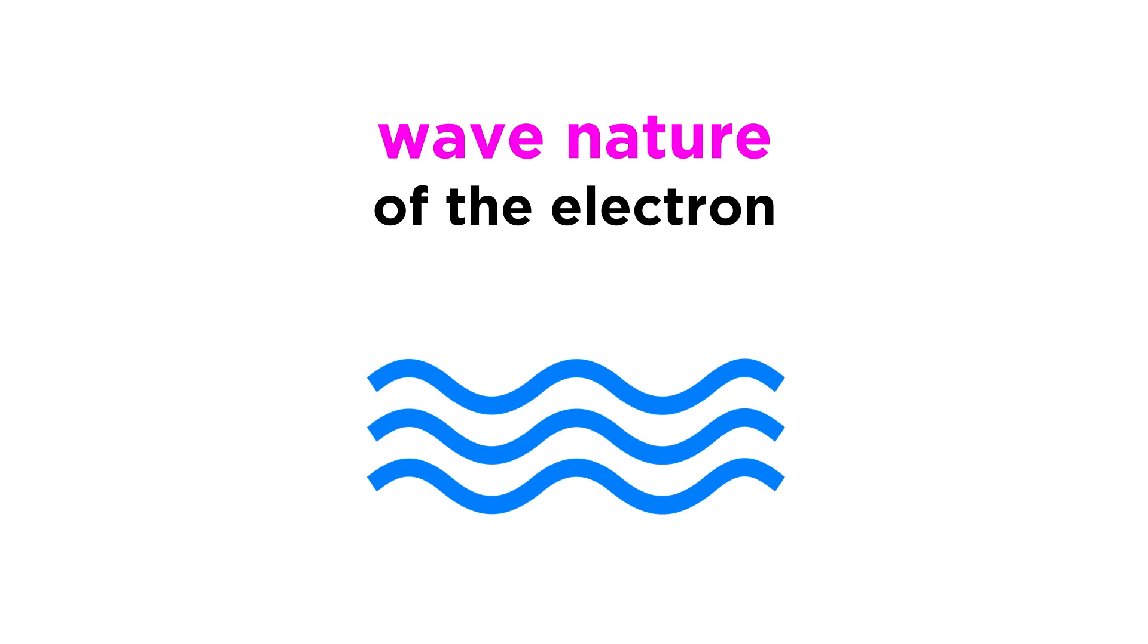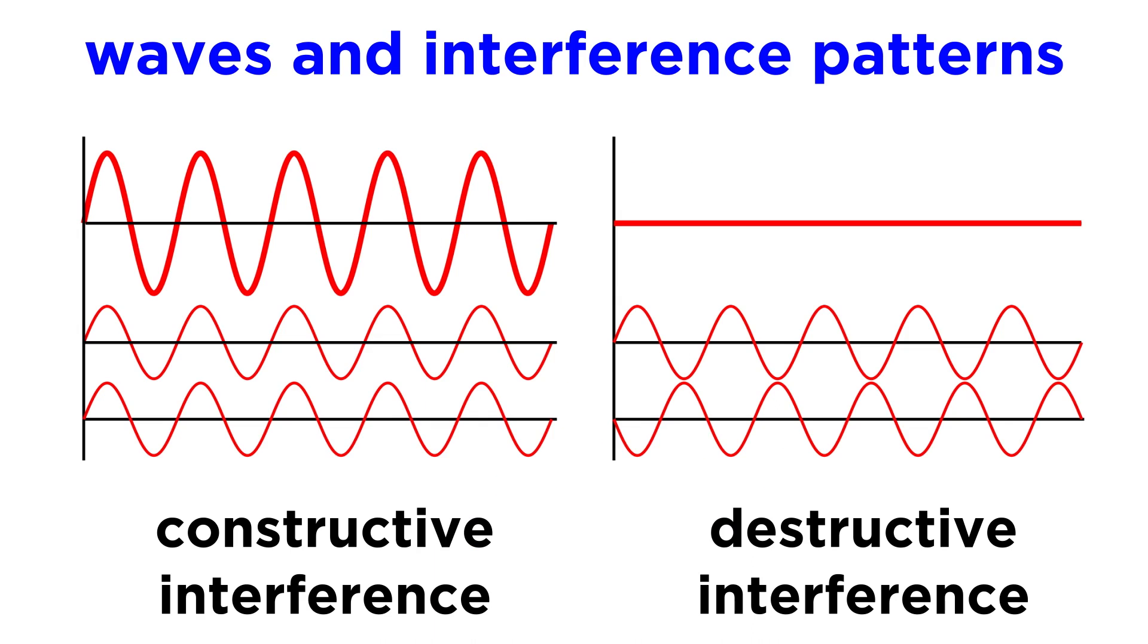This theory requires that we strongly consider the wave nature of the electron. In the classical physics series, we talked a lot about waves and interference patterns, so to get the full picture of wave behavior in order to better understand molecular orbitals, check out this tutorial now.